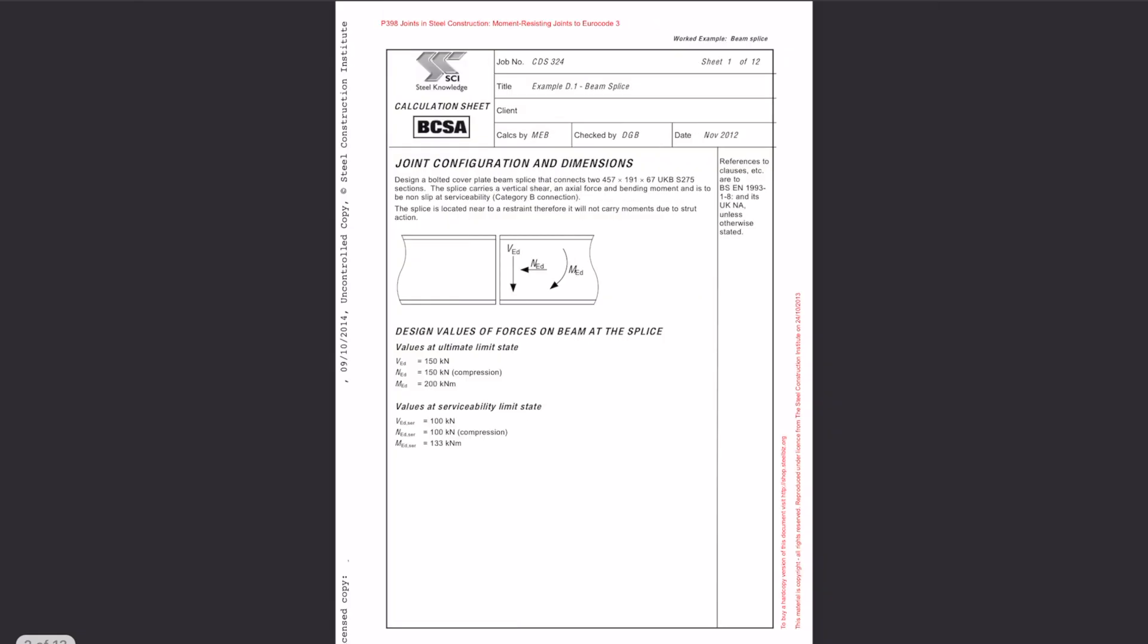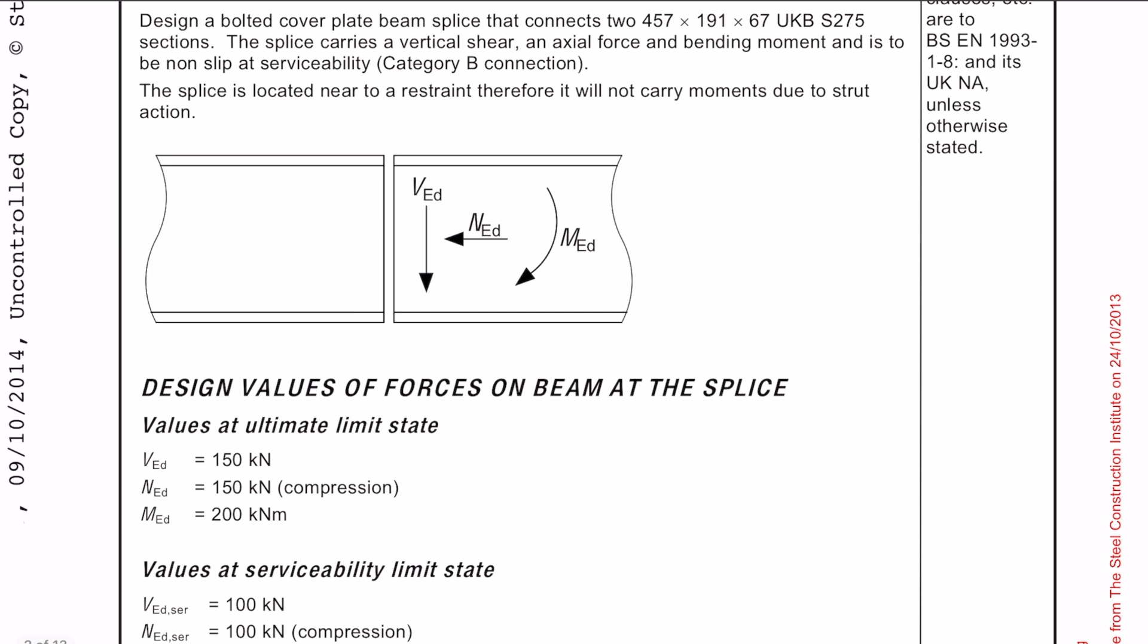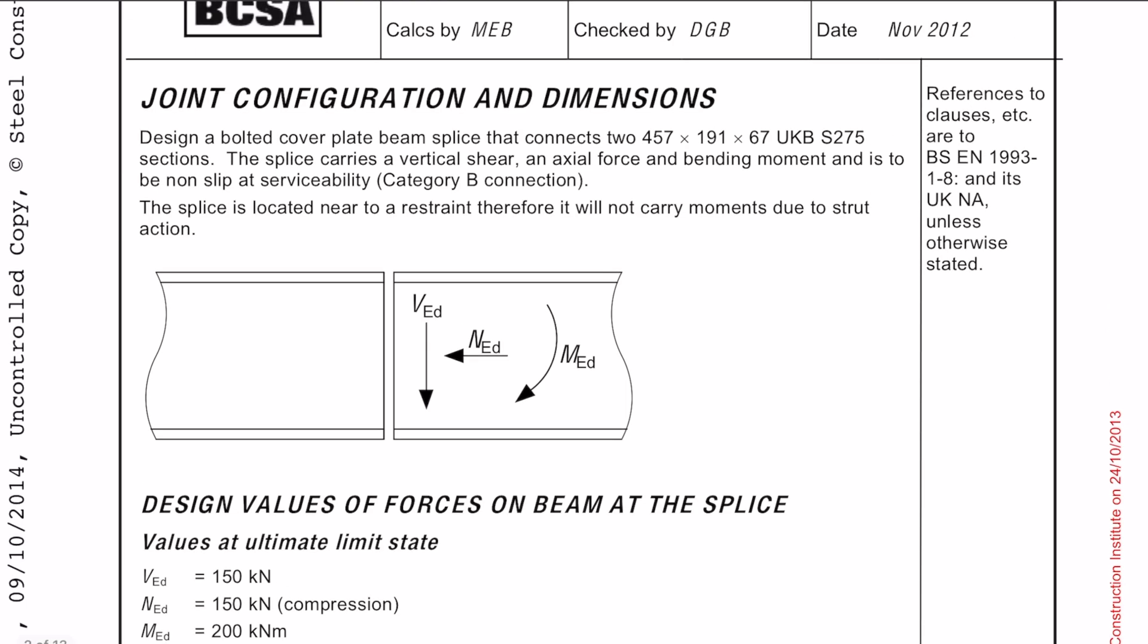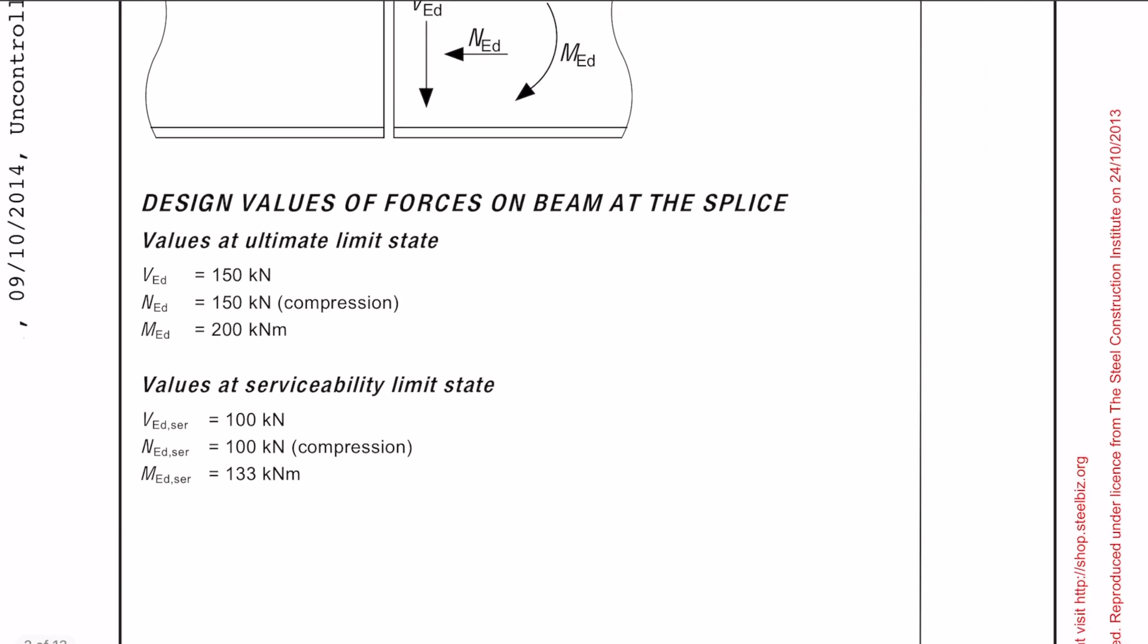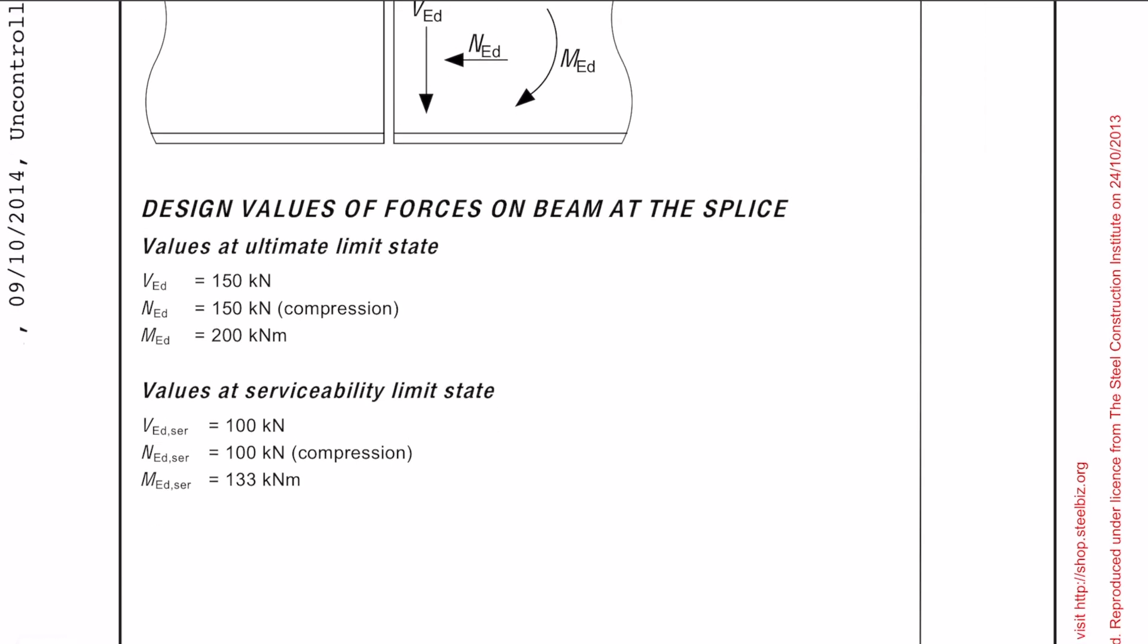Okay so this is P398 from the SCI. SCI does very good documents for steel design so it's really worth checking them out. So in this example we've got a 457UB which we need to design a bolted splice connection for. The connection is going to be a non-slip at serviceability and as you can see from the force diagram there are shear, axial and bending moments to consider.